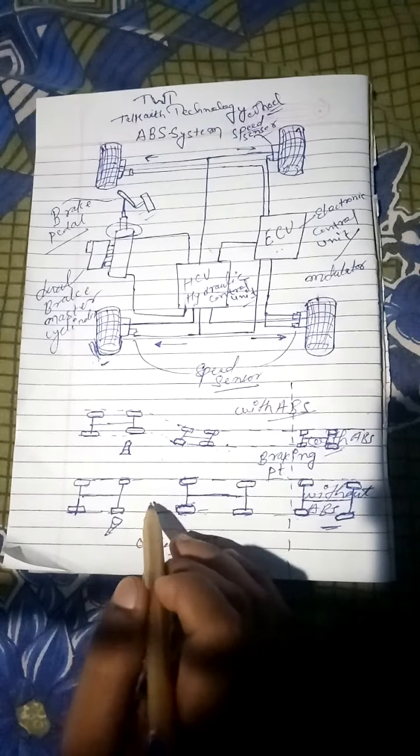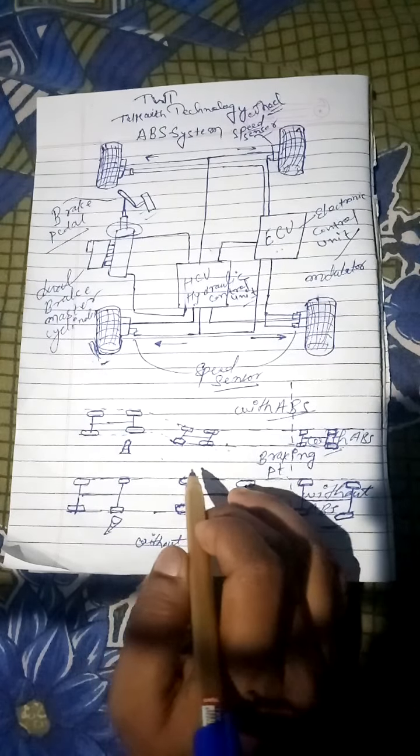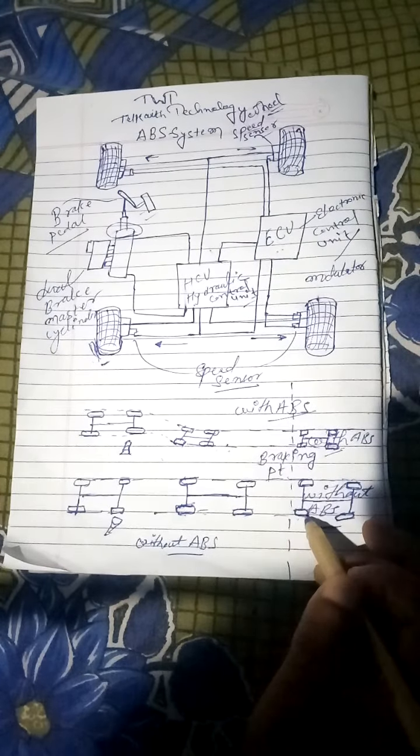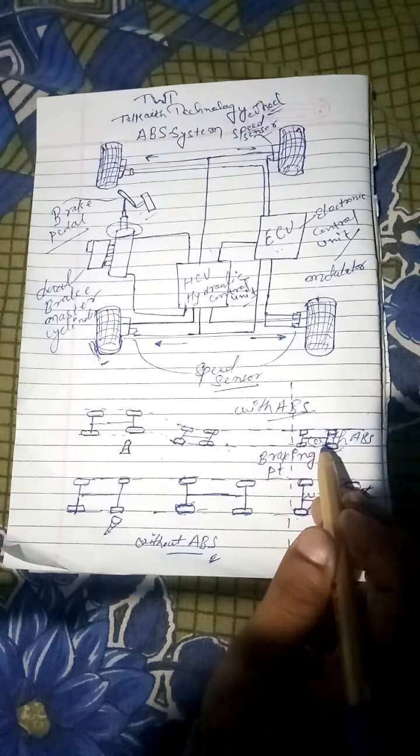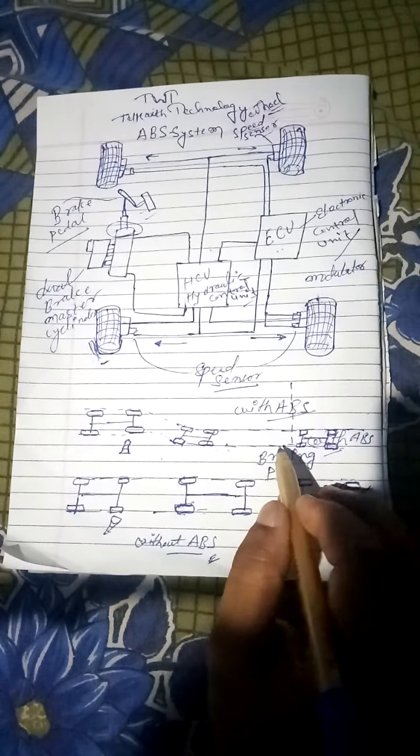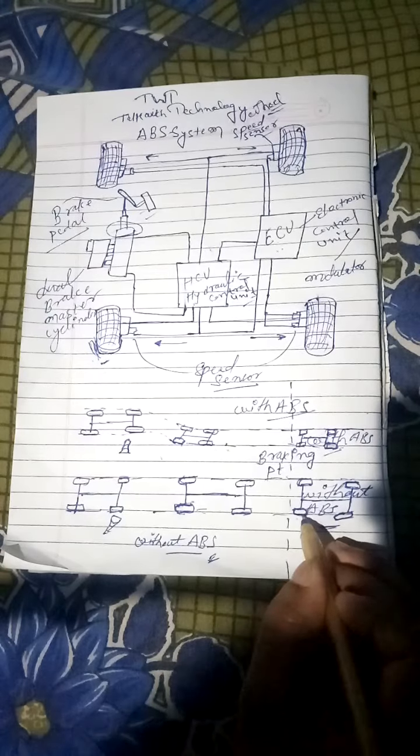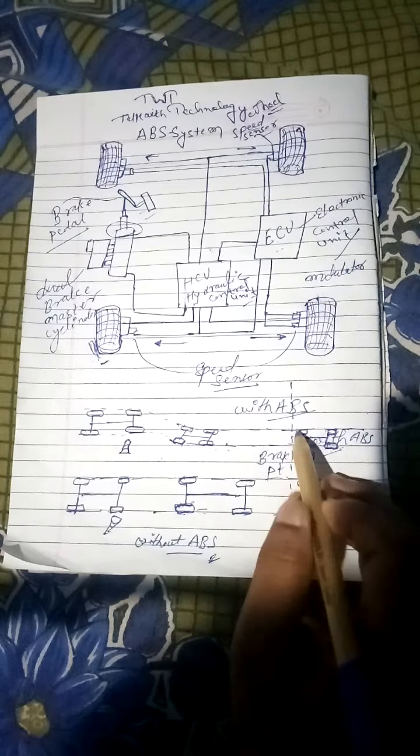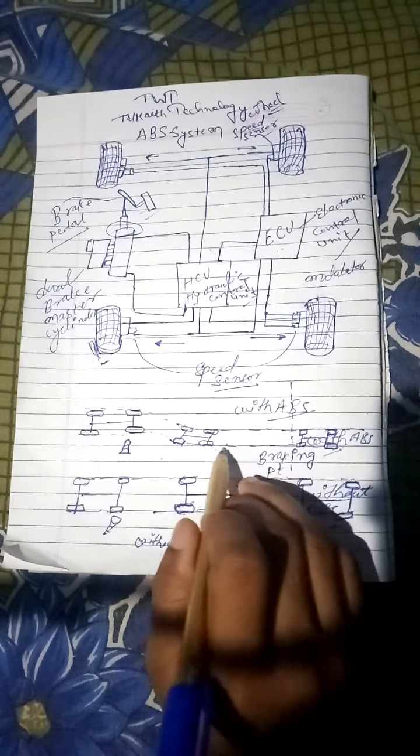Now this diagram shows ABS with ABS and without ABS. With ABS, when vehicle is traveling on this road, it is a braking point. Both vehicles' braking point is released from the brake.